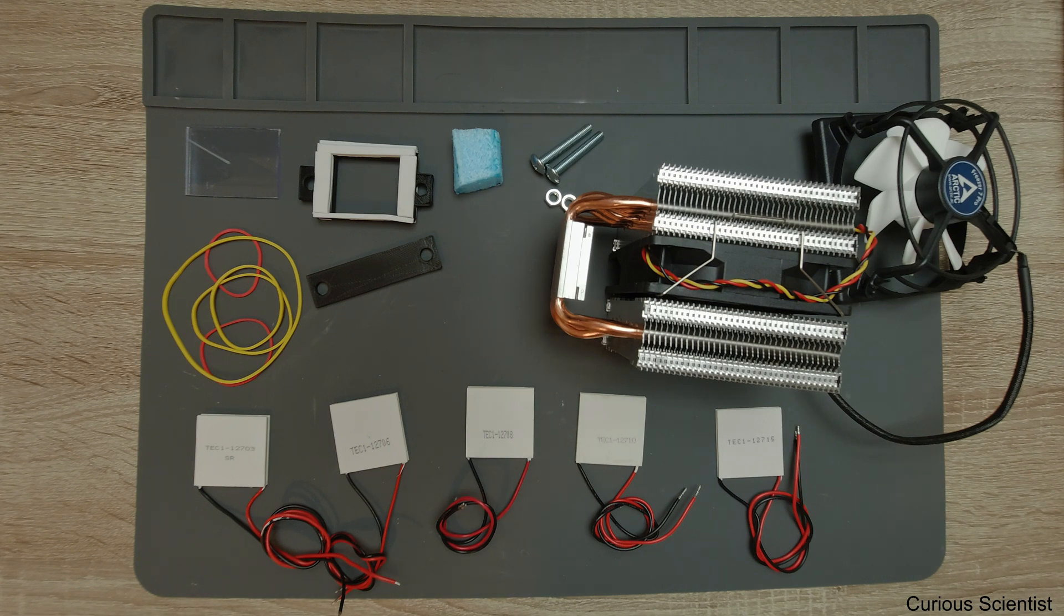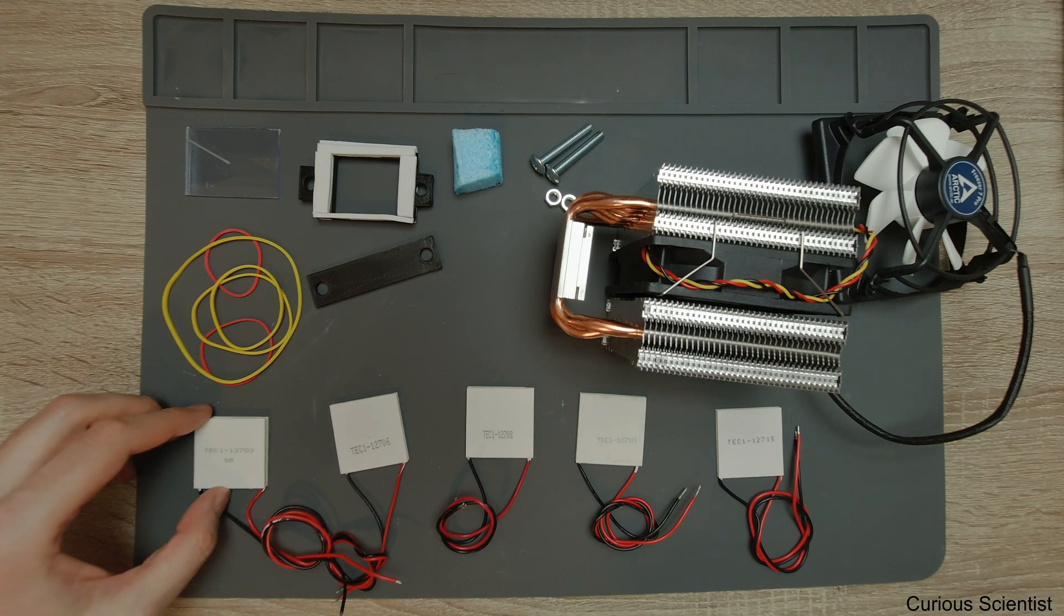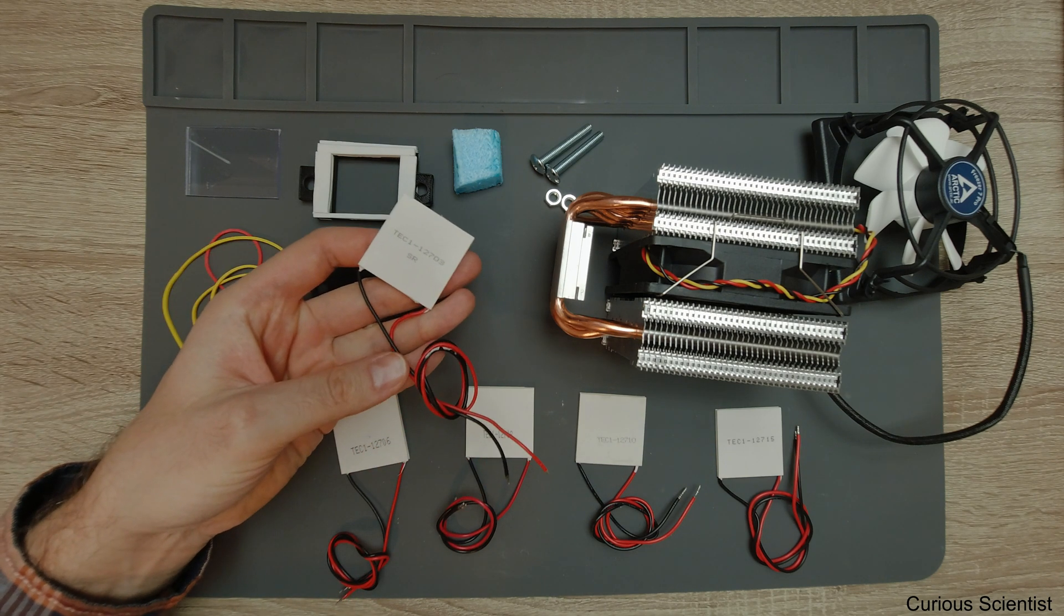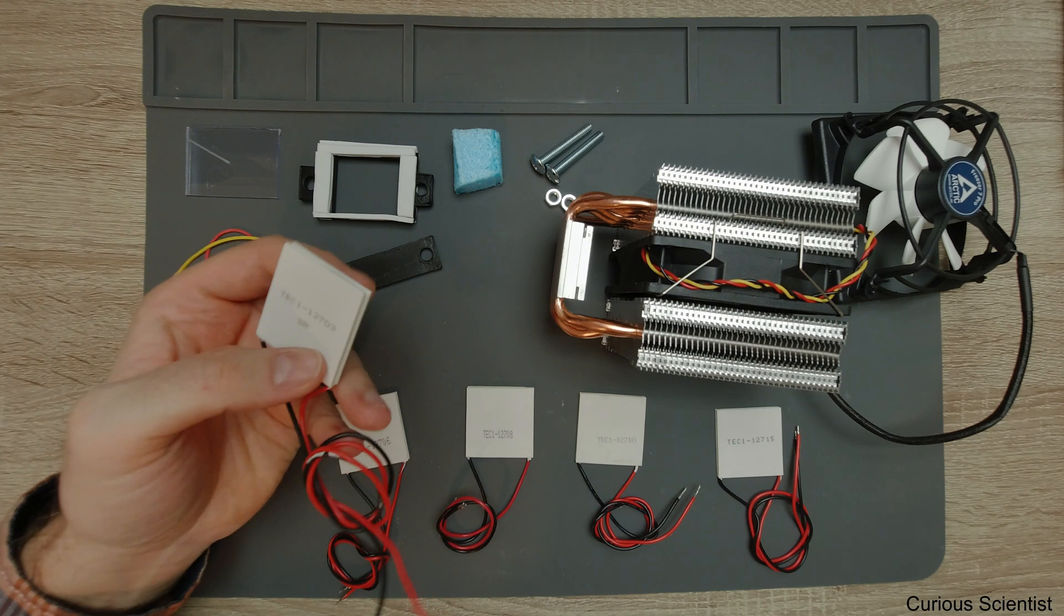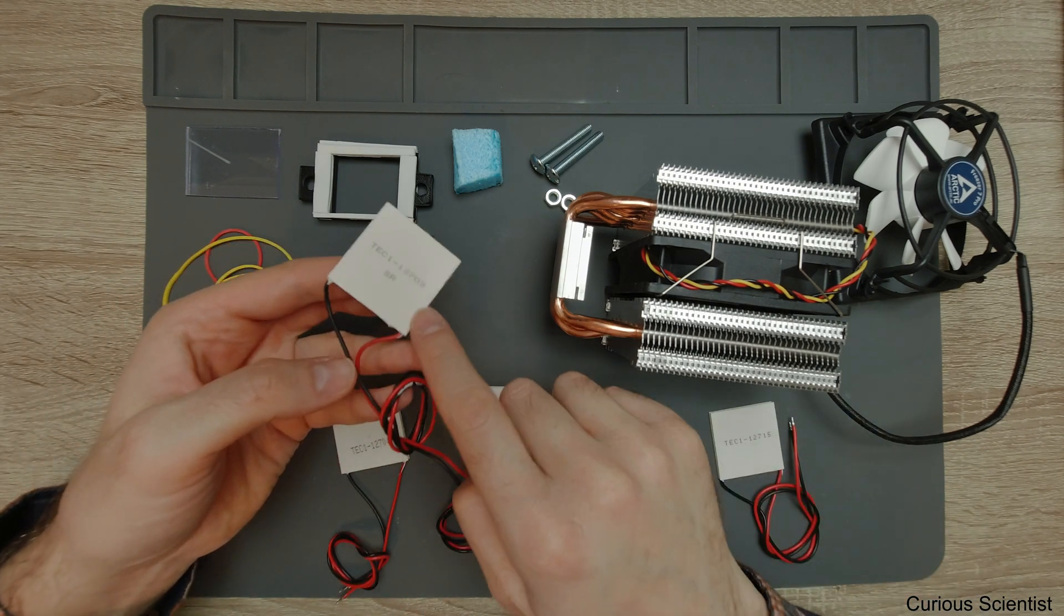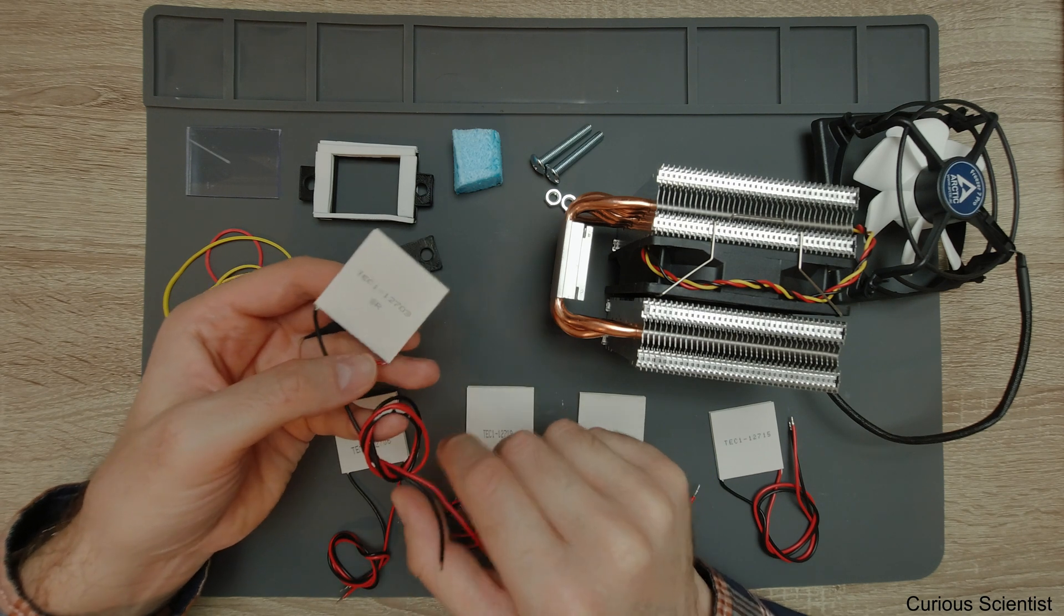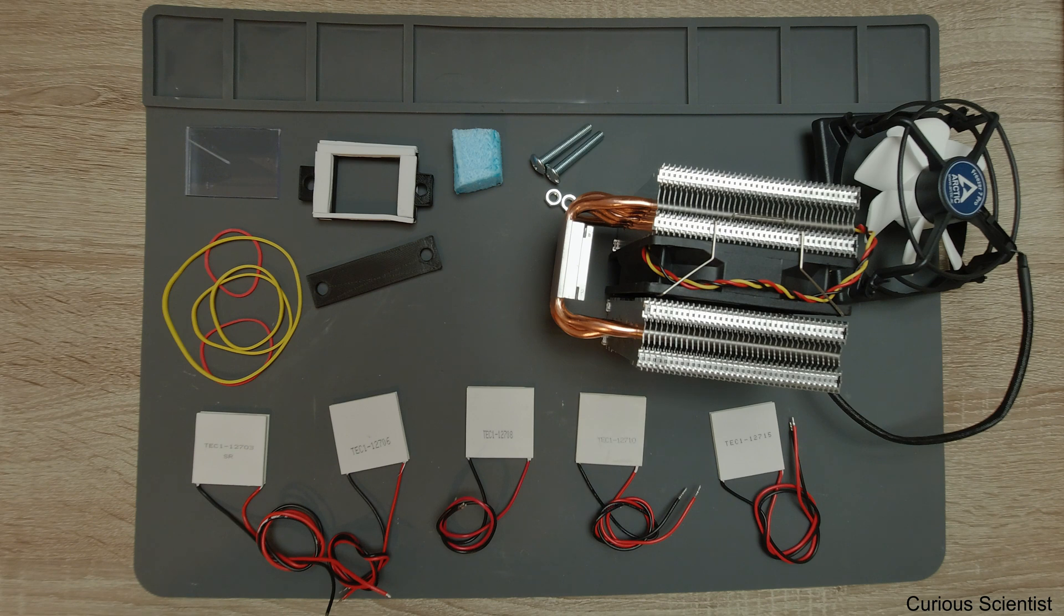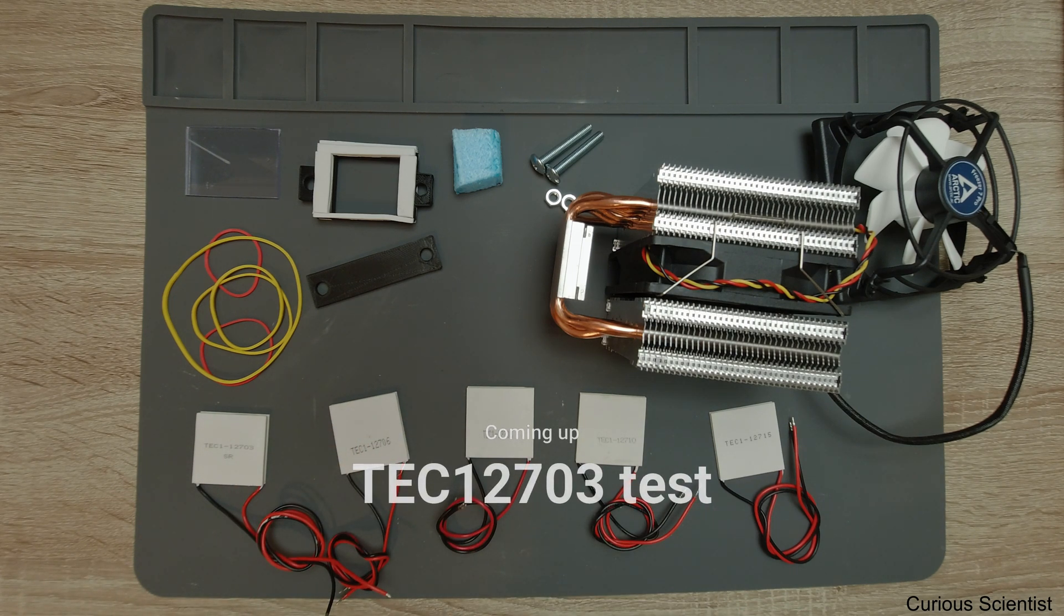What I will do now is prepare the first victim, which is the TEC 12703. This should be the weakest one compared to the others because it has just three amperes. Once I'm finished with that, I'm going to start the test series and will explain everything for each one. See you there!